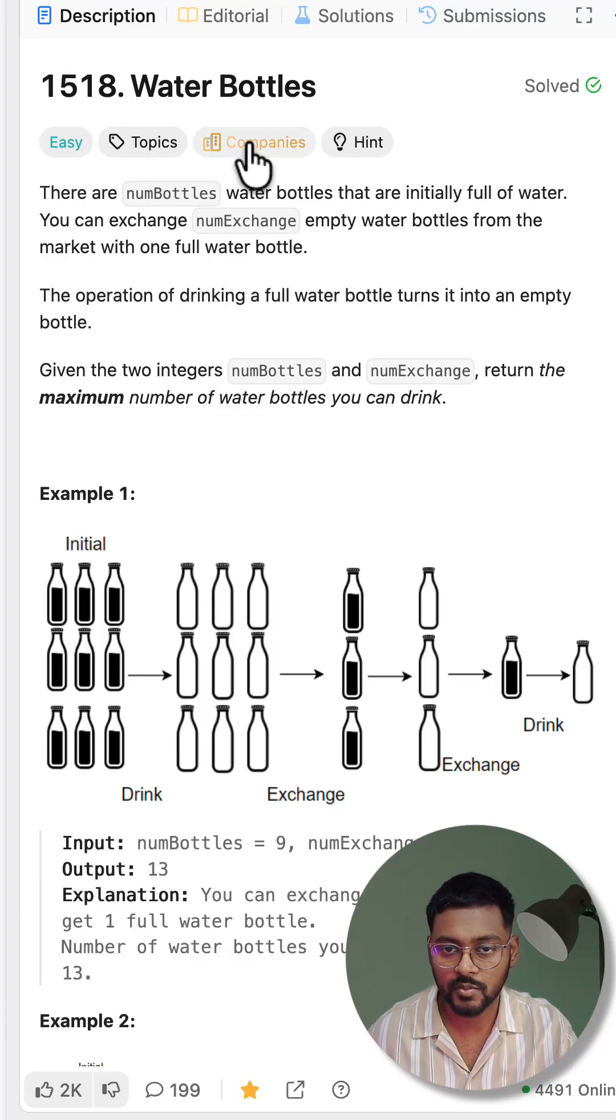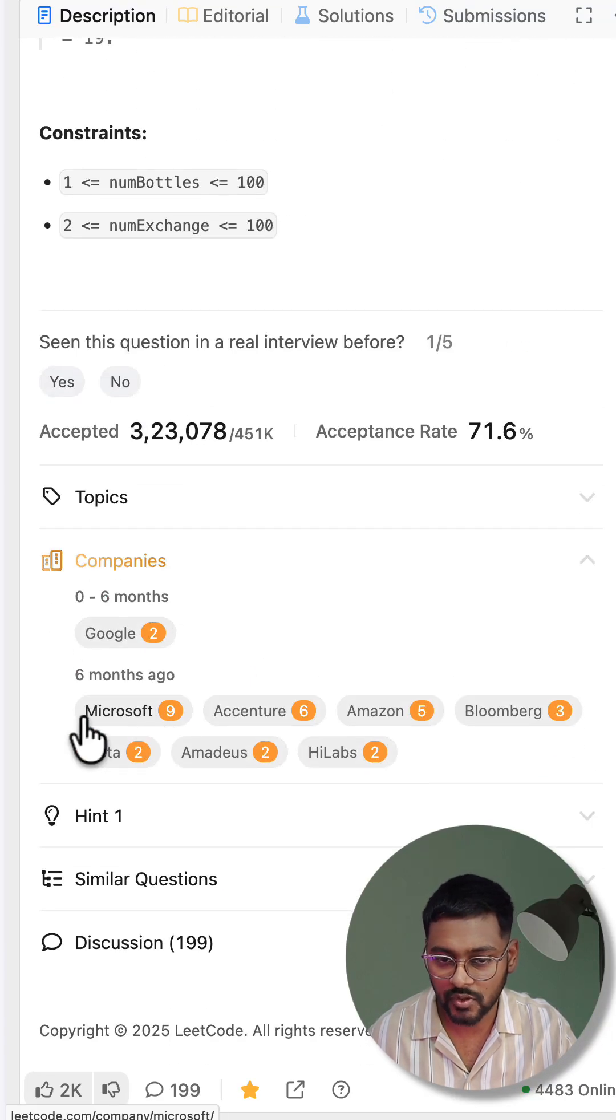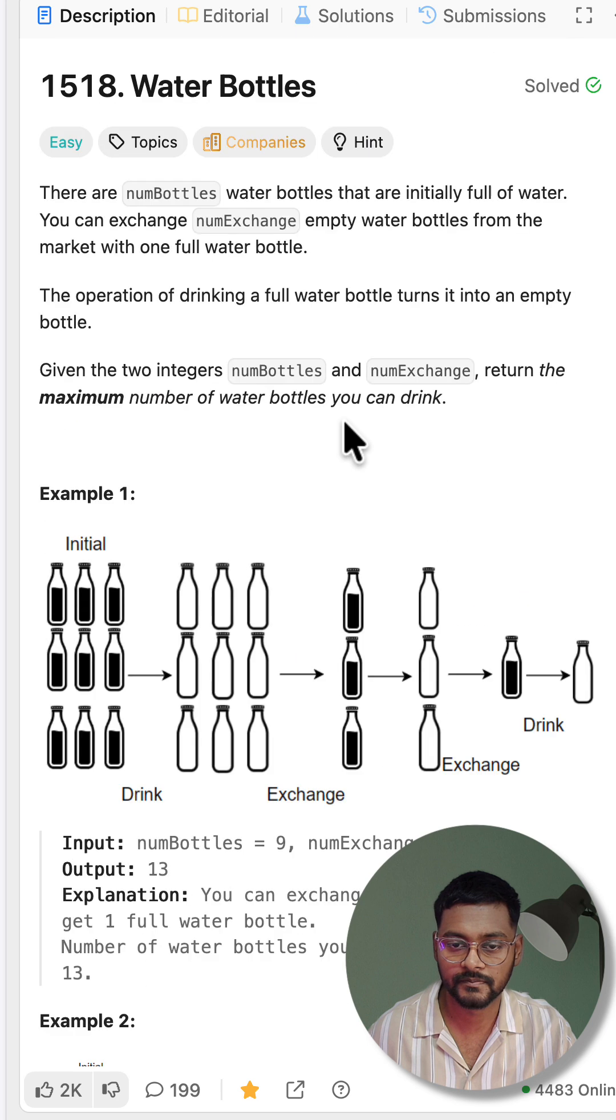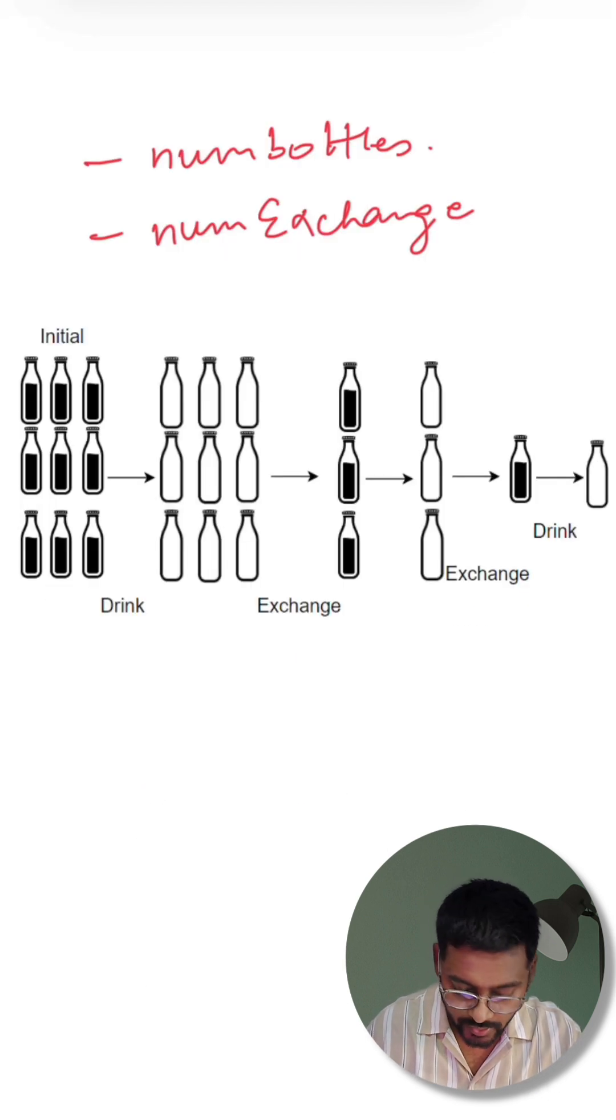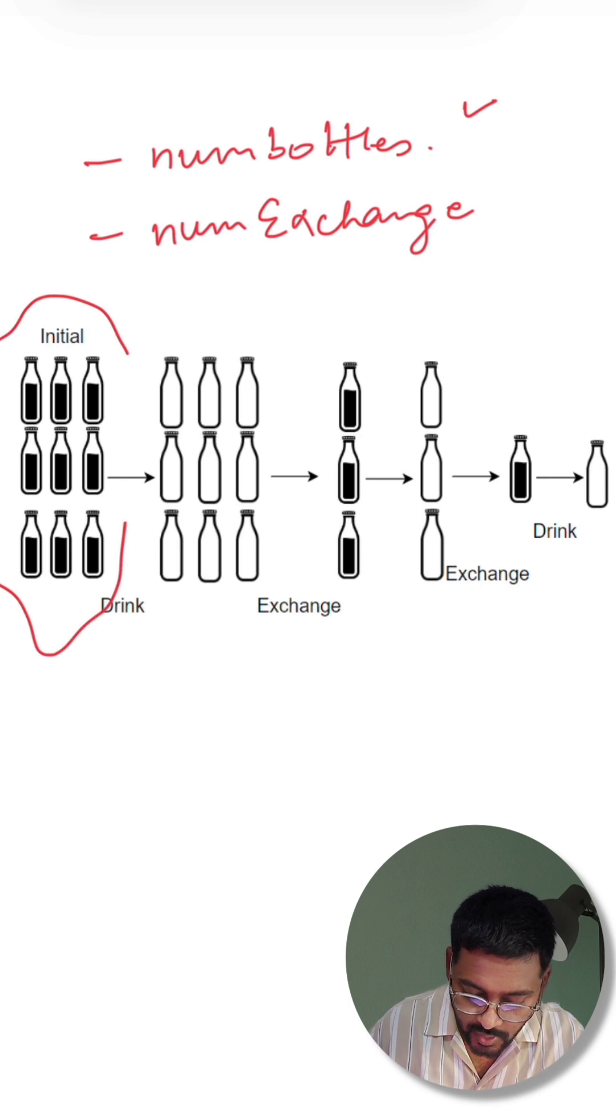It's an easy question on math with simulation but asked in a lot of good companies including Google. Here we will be getting two inputs: number of bottles initially given to us which are filled, and number of exchanges.